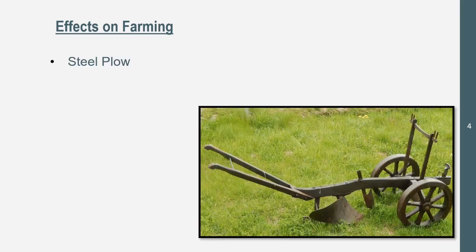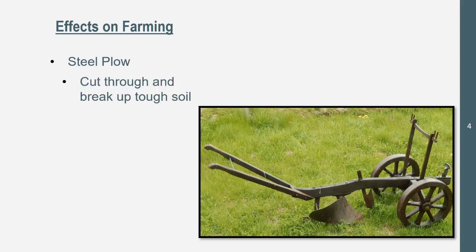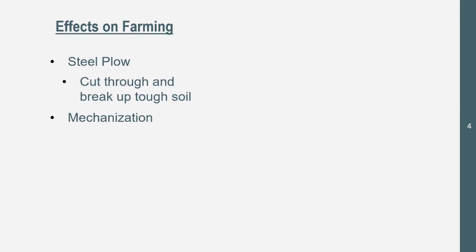Now let's get into some effects on farming. We saw the steel plow — one of the innovations that makes farming a little bit easier. The steel plow allows animals to basically go through soil. It can cut through and break up tough soil that required tons of labor, but now animals can do it. You can get some cattle, attach them to the plow, and let it dig up some of that tough soil. And we got mechanization as well.